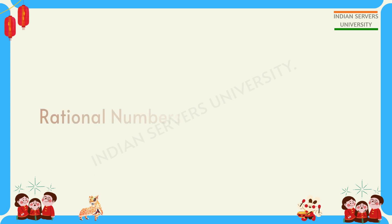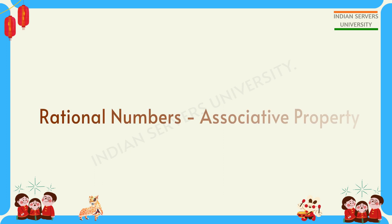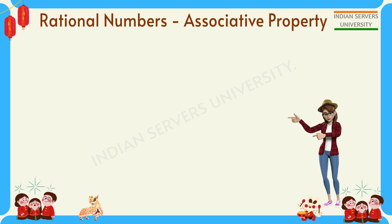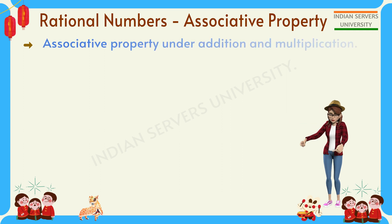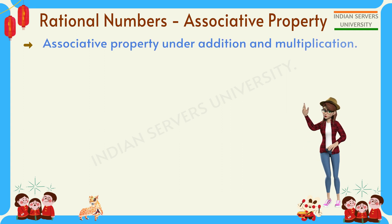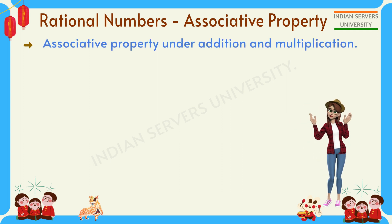Rational numbers — associative property. We will check the associative property under addition and multiplication. First, let us check addition.